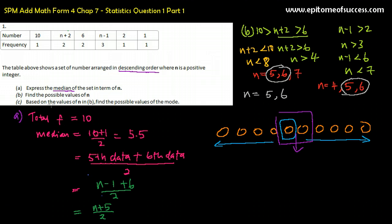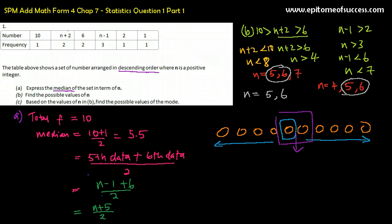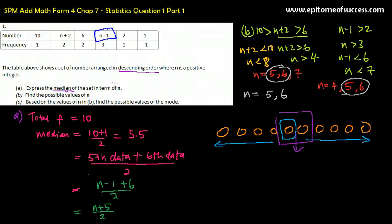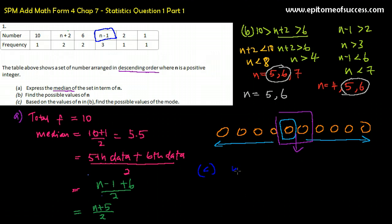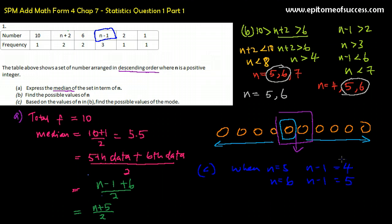Let's quickly do Part C. Based on the values of N found in Part B — if you cannot find B, you cannot do C — N is 5 and 6. Find the possible values of the mode. The mode is the value that is repeated the most, i.e., the highest frequency. The mode here is N minus 1. When N is 5, N minus 1 equals 4. When N is 6, N minus 1 equals 5. So the possible values of the mode are 4 and 5.